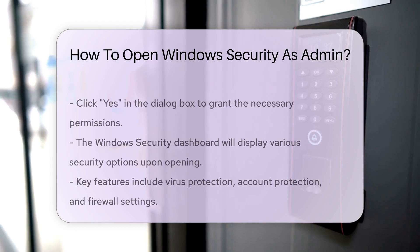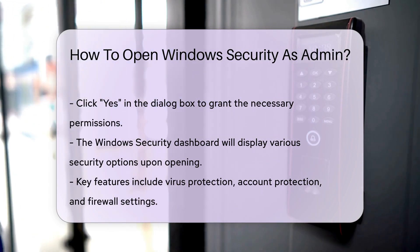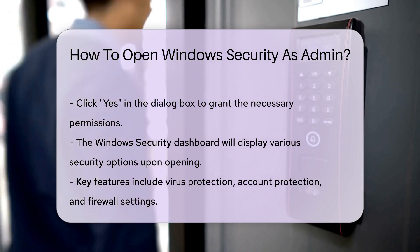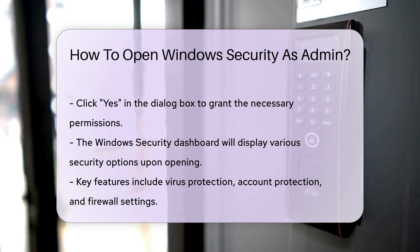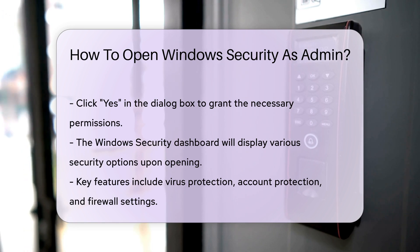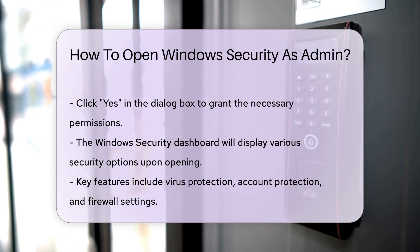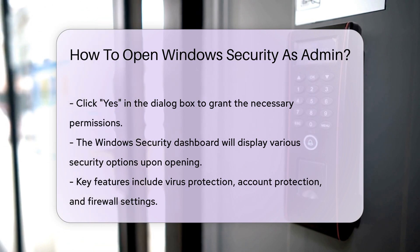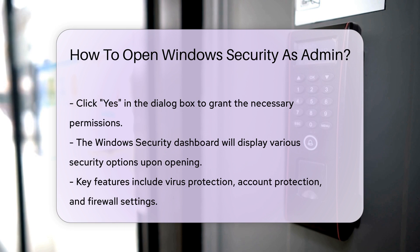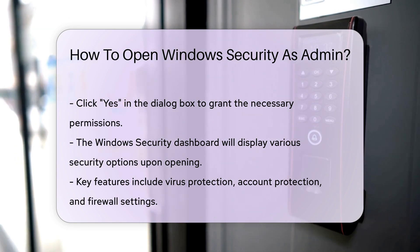Once opened, you will see the Windows Security dashboard, which includes options for virus protection, account protection, firewall settings, and more. Navigating through these options allows you to configure various security features tailored to your needs. For instance, you can manage virus and threat protection settings, review device performance, and access family options.